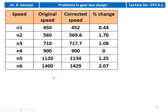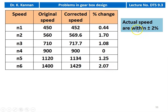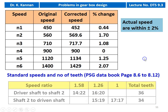Now calculate the percentage of change for each speed. Standard speeds: 450, 560, 710, 900, 1120, 1400. Actual speeds: 452, 569.6, 717.7, 900, 1134, 1429. Percentage of change = (actual − standard) / standard × 100. For N1: (452 − 450) / 450 × 100 = 0.44%. For N2: (569.6 − 560) / 560 × 100 = 1.7%. For N3: 1.08%. For N4: 0%. For N5: 1.25%. For N6: 2.07%. The actual speeds are within plus or minus 2 percent, which is the required check.